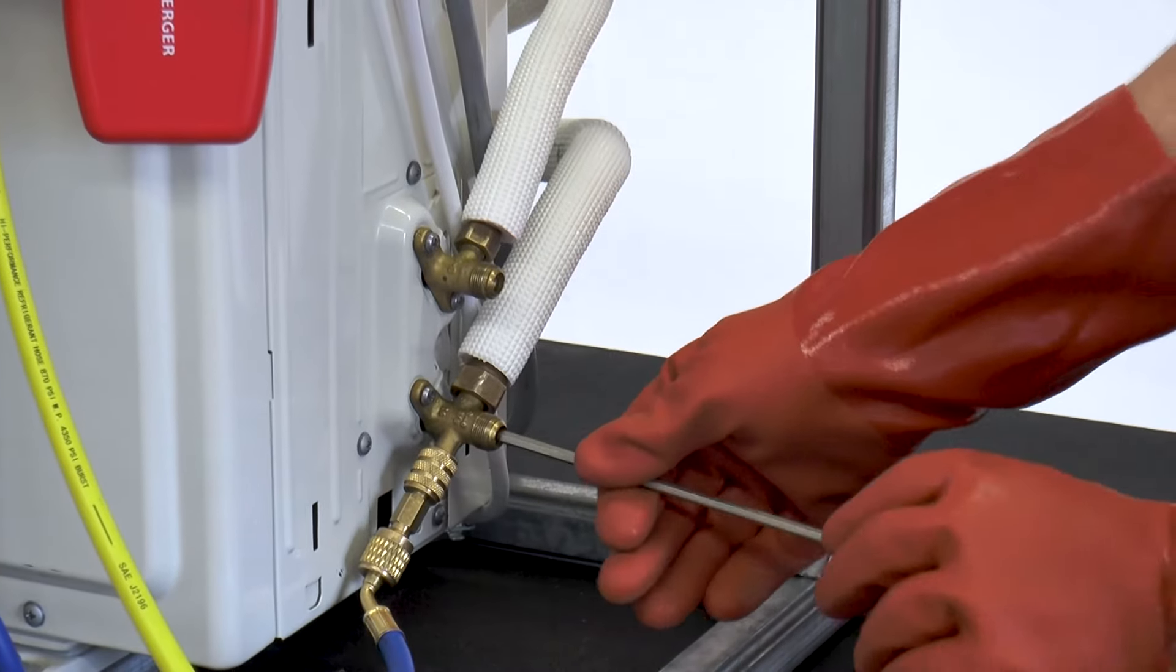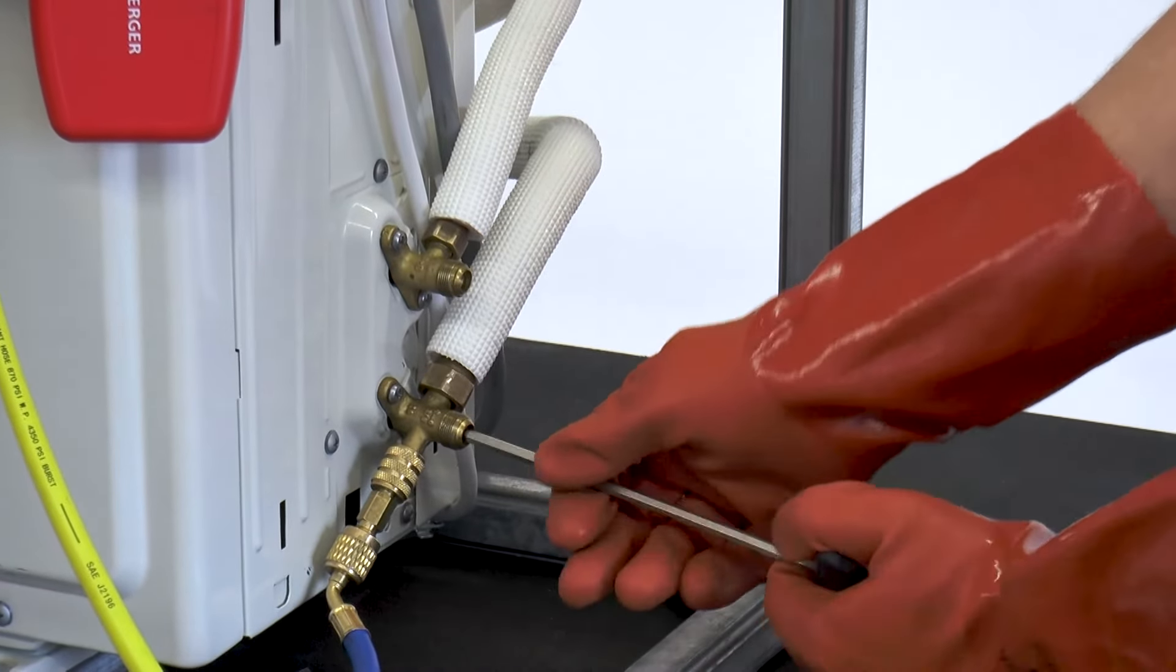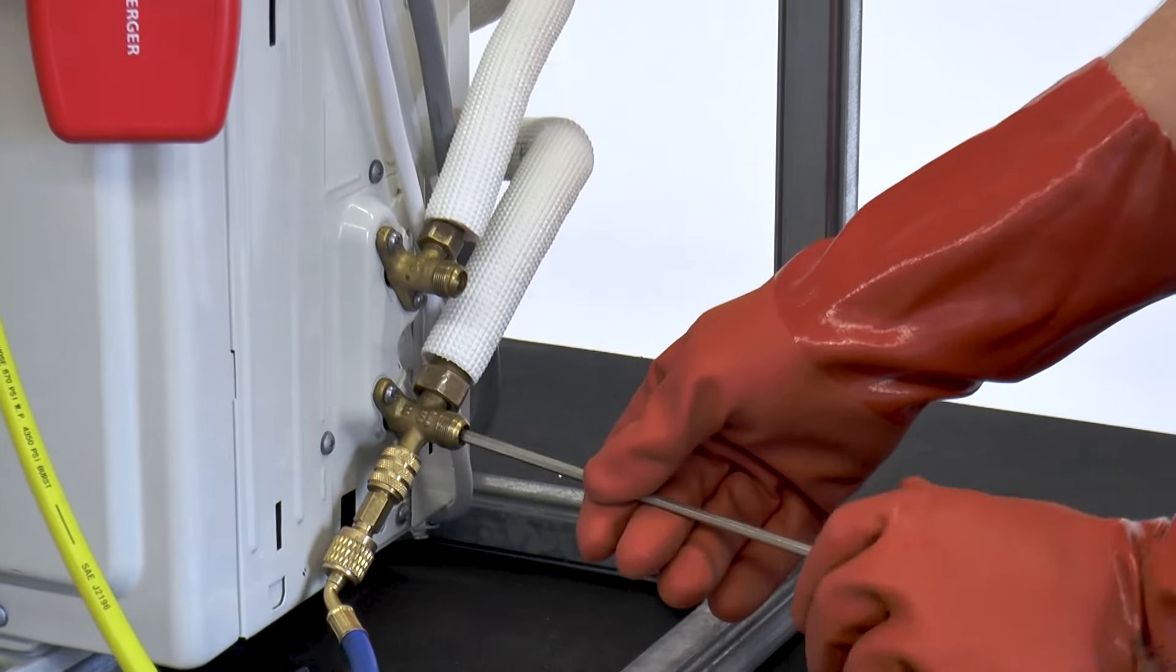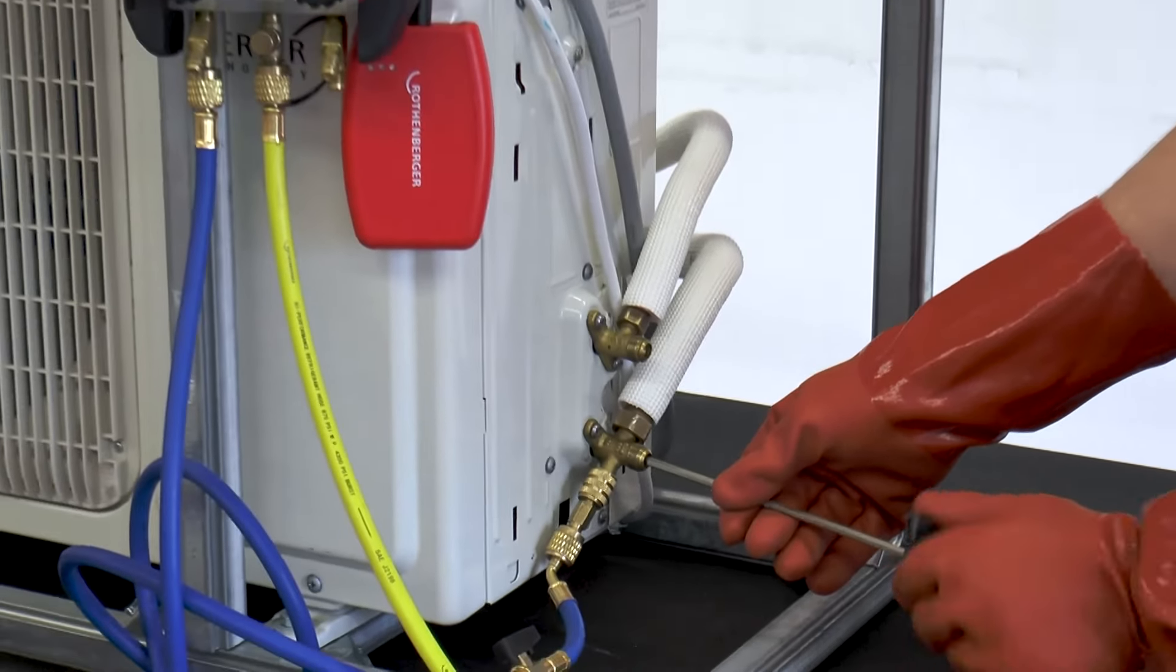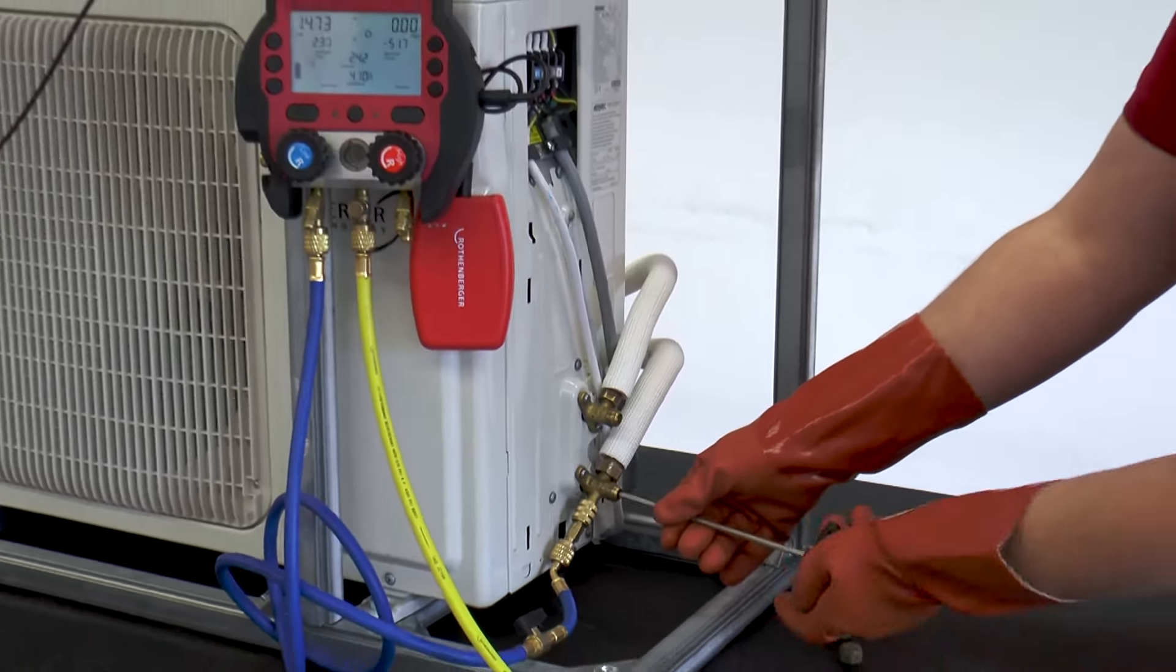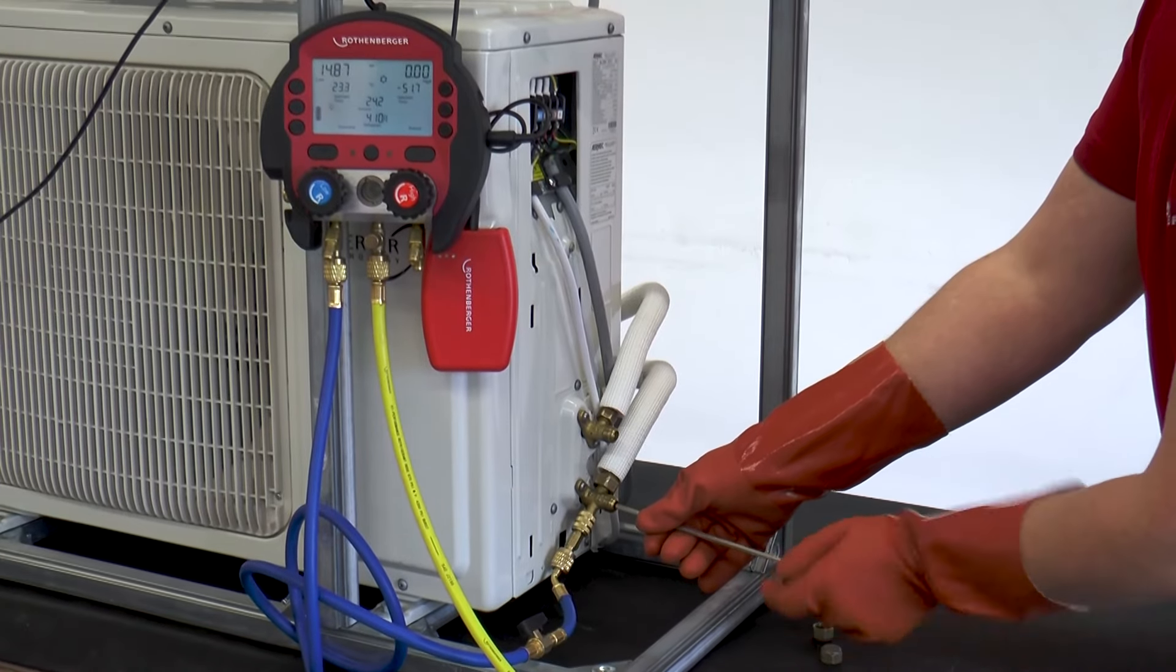After the grub screws have been completely opened, the unit can be switched on and put into operation. During commissioning, make sure that the system runs correctly and that the system data is correct.